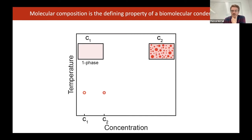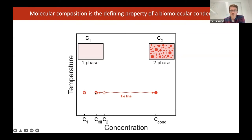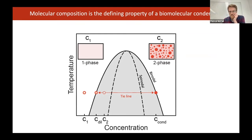This tells us the system at this concentration and temperature is thermodynamically unstable. What actually happens is the system demixes — you have a dilute phase and a dense phase coexisting. If we sweep through temperature, we find a collection of points that make what we call the binodal — the boundary between the one-phase regime where we don't have phase separation and the two-phase regime where we do. There's a lot of information in the binodal.